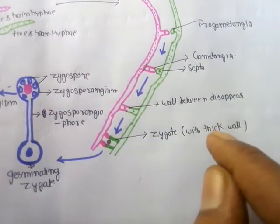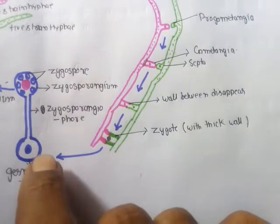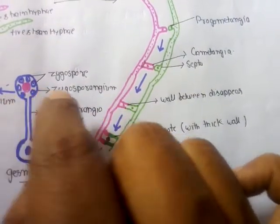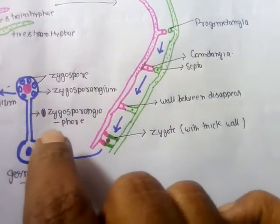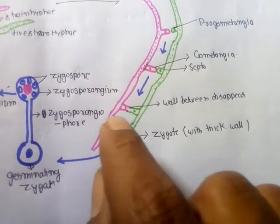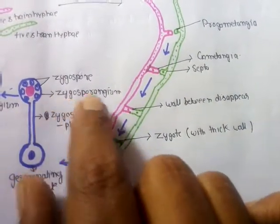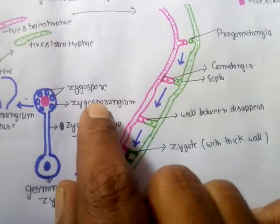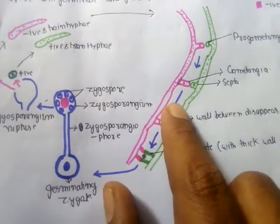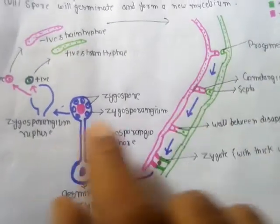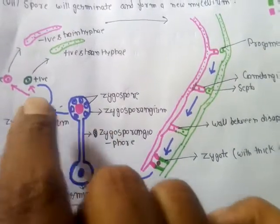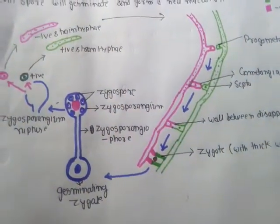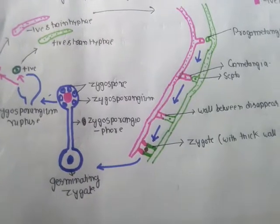The zygote may detach from the parental hyphae and germinate — a vertical outgrowth appears with a swollen tip called the zygosporangium, on the zygosporangiophore. Inside the zygosporangium, zygospores are produced: half are positive strain and half are negative strain. When the zygosporangium ruptures, spores are released and each develops into its respective type of hyphae.